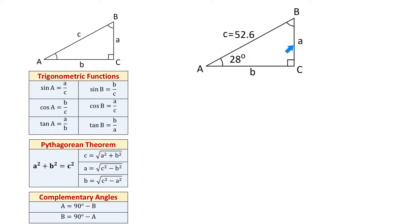We will find side A, side B, and angle B. To the left, we have all the formulas we need to solve a right triangle. If you watched one of the previous videos, then we went over these formulas, but if not, we will go over them one more time. All of them refer to this right triangle with sides A and B and hypotenuse C.